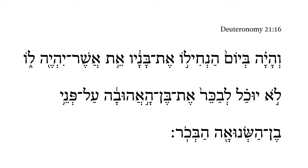Deuteronomy 21:16. We get here now the 'then' statement of this if-then. Previously, if a husband had two wives and they both bore him sons — there was a loved wife and an unloved wife — and they both had sons.